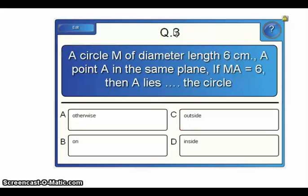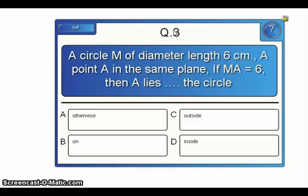The next exercise: choose the correct answer. A circle M has diameter length 6 cm, which means its radius equals 3 cm. A point A in the plane has MA equal to 6 cm. Since the distance between point A and the center (6 cm) is more than the radius (3 cm), point A lies outside the circle.